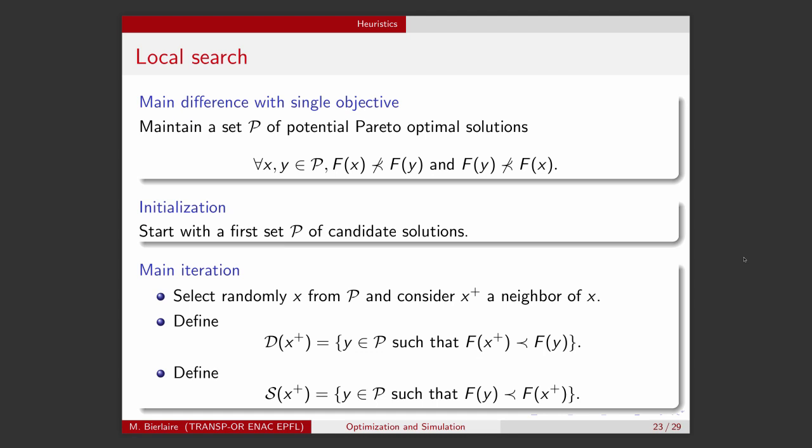In the context of heuristics, we had three concepts: the concept of neighborhood for exploration of the space, the concept of local search for intensification, and the concept of meta-heuristics for diversification. In the context of multi-objective optimization, these three things will be the same except for the local search. So we will have to design neighborhoods as before, and we will have these meta-heuristics like simulated annealing or variable neighborhood search that will do diversification.